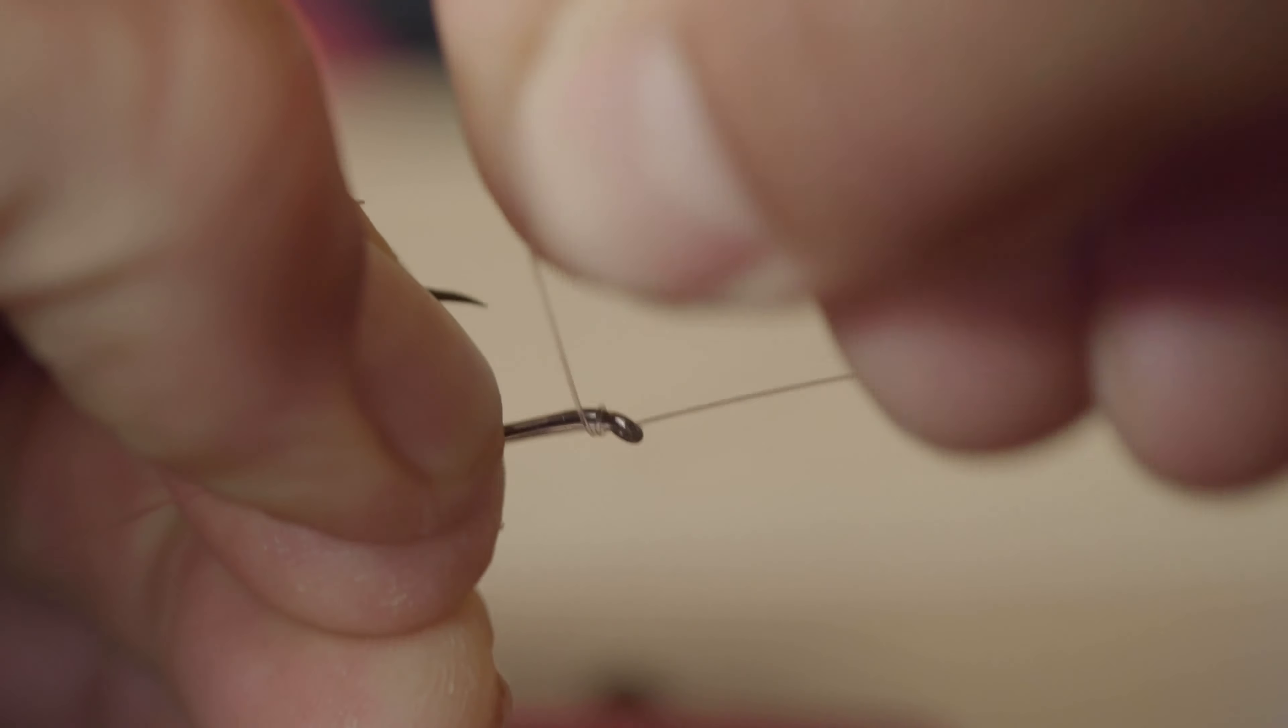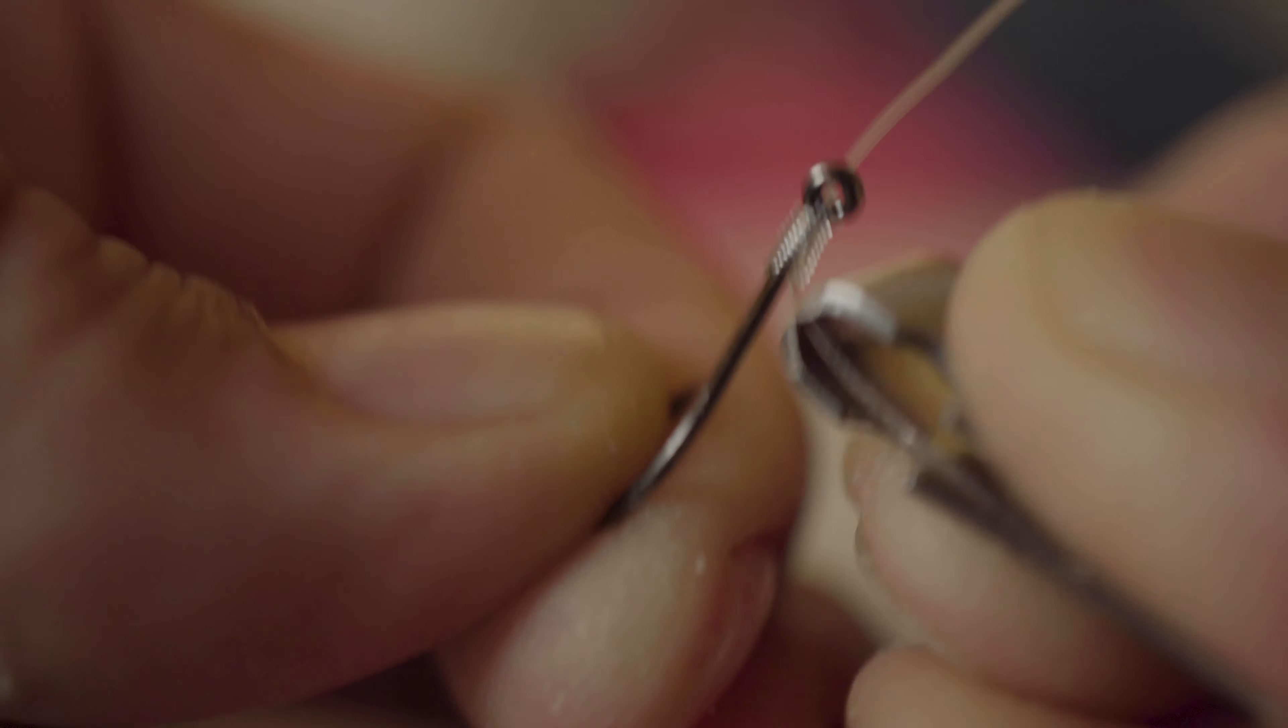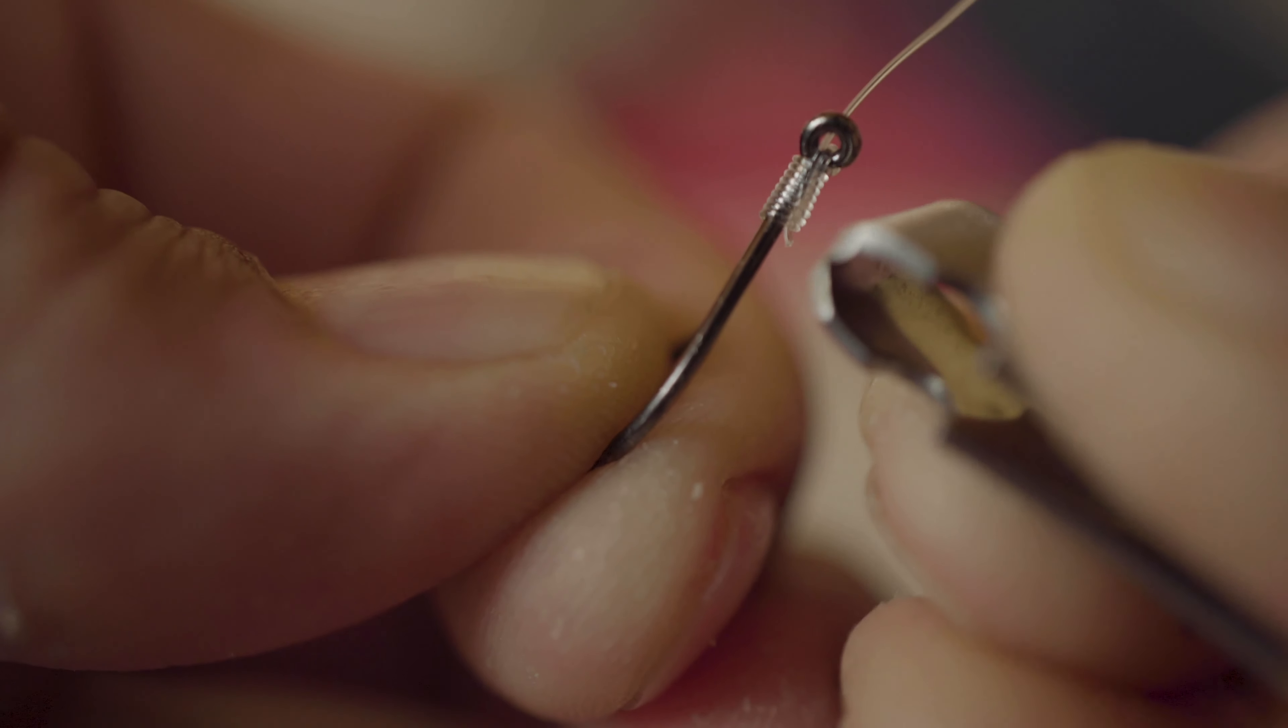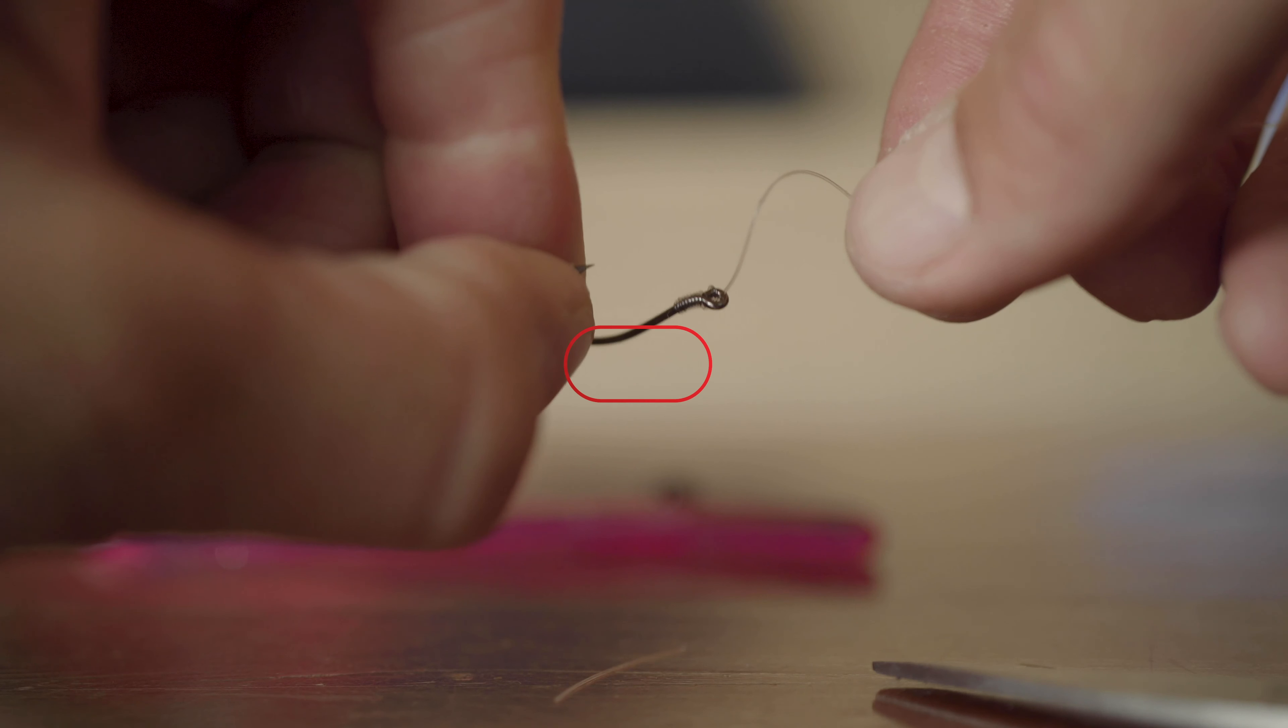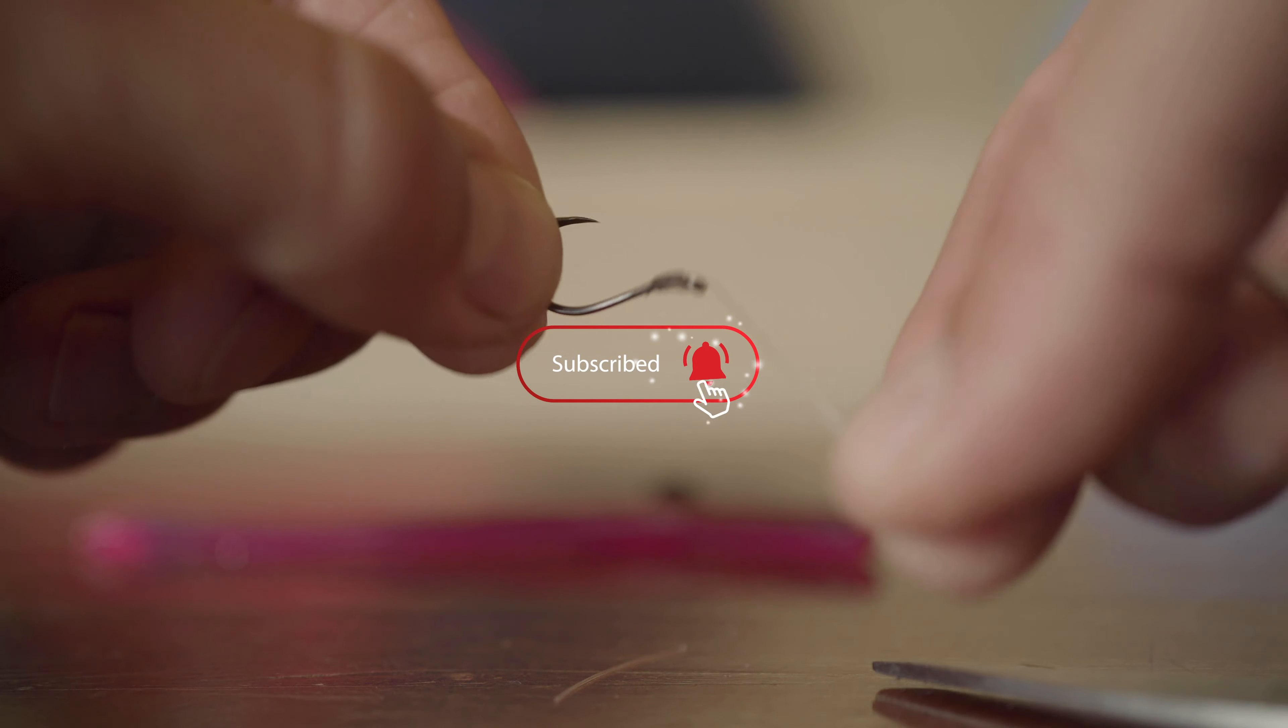Take your other hand and pull the tag end, keep pulling until the rest of your leader comes out and cinches those wraps you just made—those eight wraps. Then you'll have a tight knot and you'll be hooking more fish. This is a snell knot.